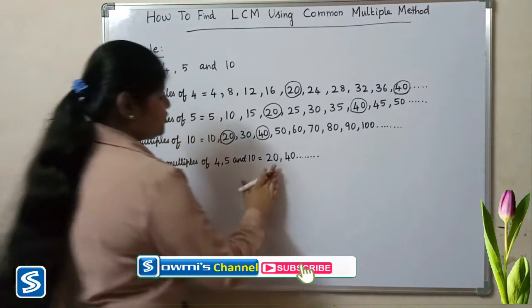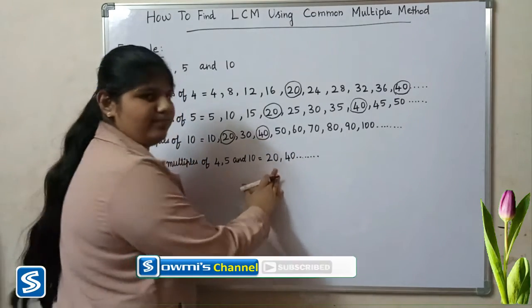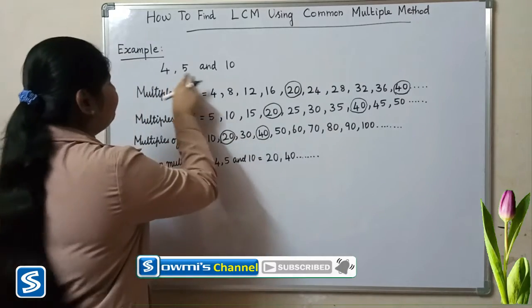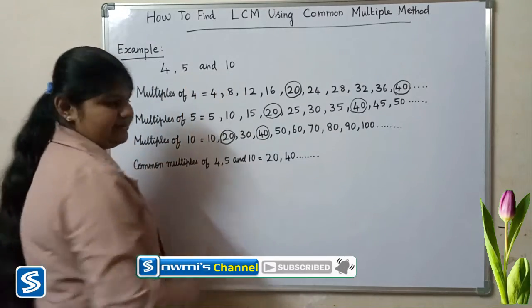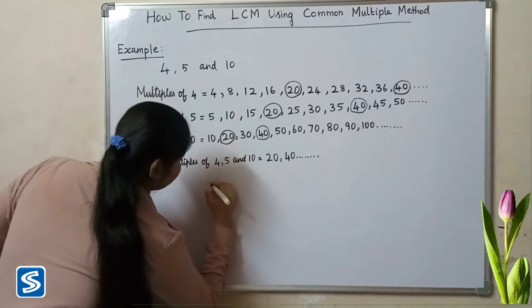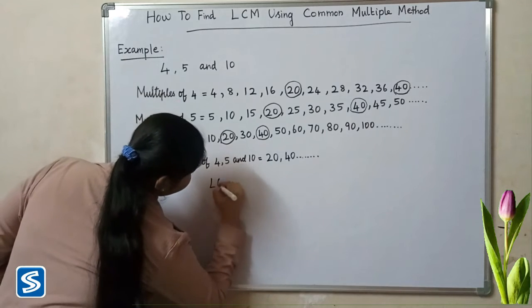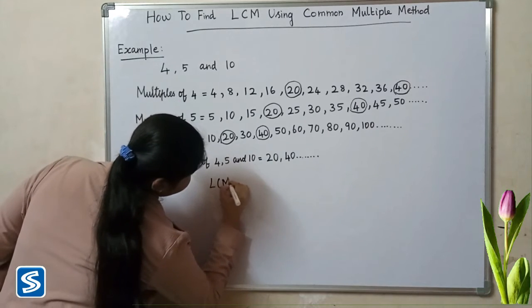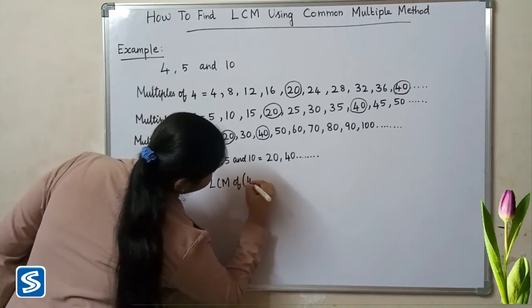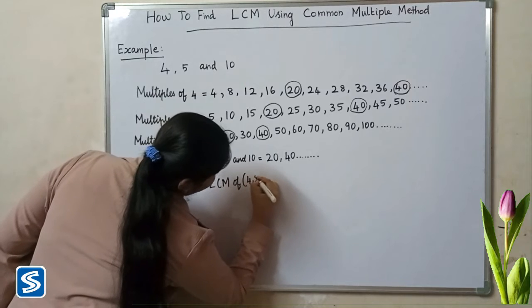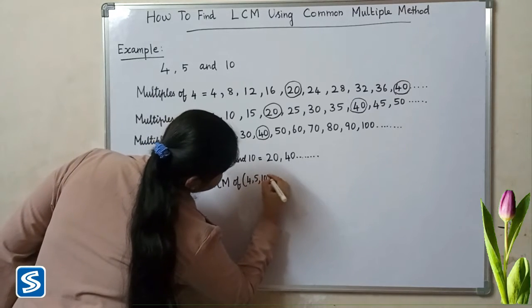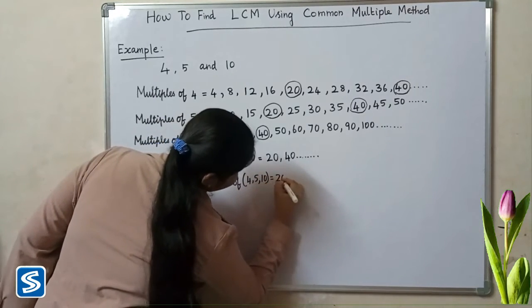Here, 20 is the smallest common multiple which is divisible by 4, 5, and 10. So, LCM of 4, 5, and 10 is 20.